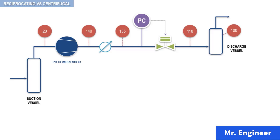Please note that all these pressures are relative pressures and not absolute pressures. As seen in this example, these gauge pressures steadily decrease from the discharge of the compressor to the discharge vessel. At the initial conditions noted here, let's now assume that the compressor flow is 500 actual cubic feet per minute and that the brake horsepower is 250.